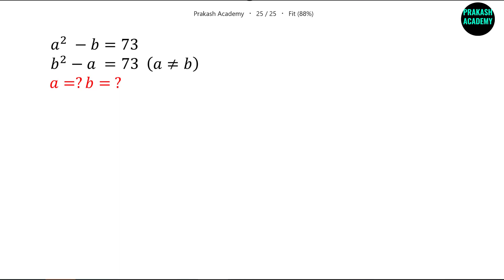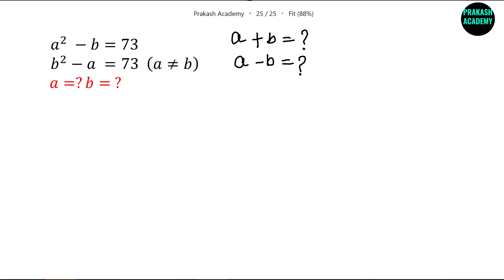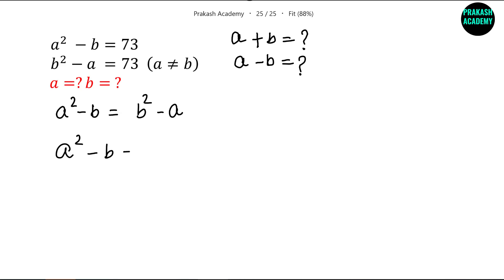What we will do is somehow calculate the value of A plus B, and then also calculate the value of A minus B, and then use these two to solve for A and B. Since both expressions equal 73, we can write A² minus B equals B² minus A. Taking everything to the left-hand side, we have A² minus B minus B² plus A equals 0.